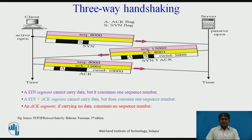Connection establishment uses three-way handshaking. TCP transmits data in full-duplex mode. When two TCPs in two machines are connected, they are able to send segments to each other simultaneously. This implies that each party must initialize communication and get approval from the other party before any data are transferred. The connection establishment in TCP is called three-way handshaking. In this example, an application program called the client wants to make a connection with another application program called the server, using TCP as the transport layer protocol.